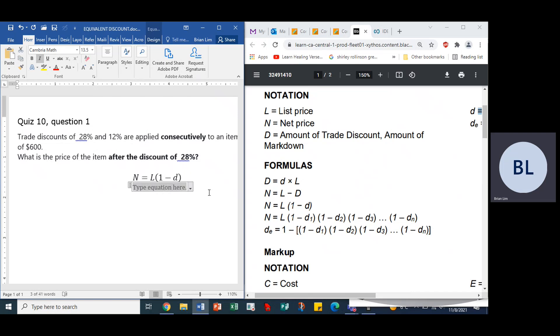So we are interested in finding N. N is equal to - the list price is $600 right here. So we put in 600, we put one minus, now the discount rate is 28%, but we need to enter it as a decimal. So let's go back and put in 0.28.